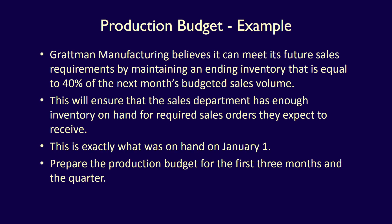Let's continue with our example of Grattman Manufacturing to demonstrate the preparation of the production budget. Grattman Manufacturing believes it can meet its future sales requirements by maintaining an ending inventory equal to 40% of next month's budgeted sales volume. This will ensure the sales department has enough inventory on hand for required orders and any unusual demand requirements. This is exactly what is on hand on January 1st. Prepare the production budget for the first three months and the quarter.